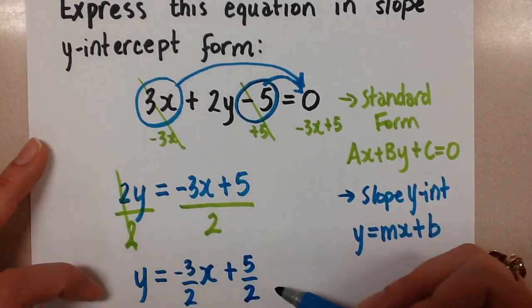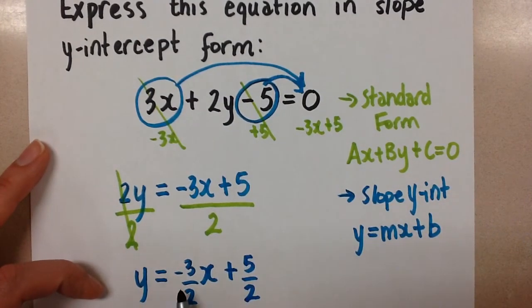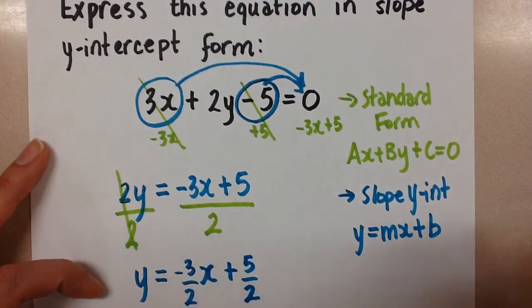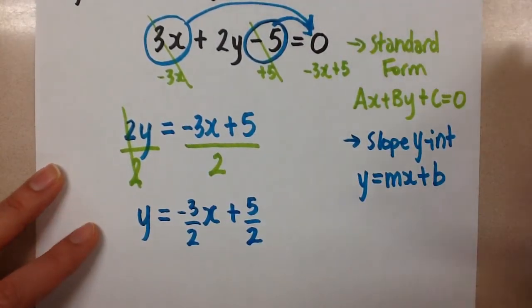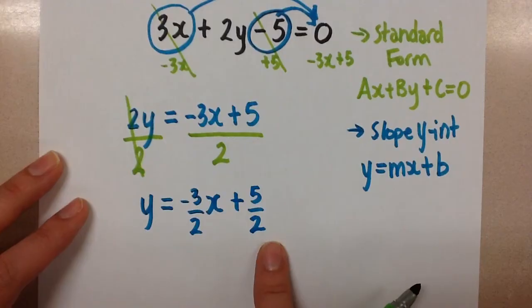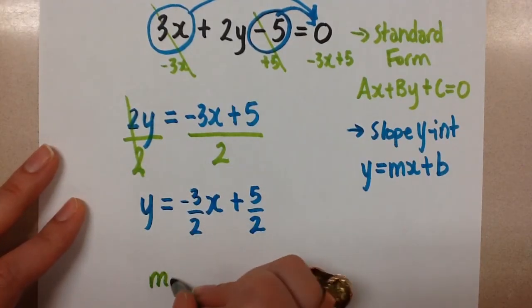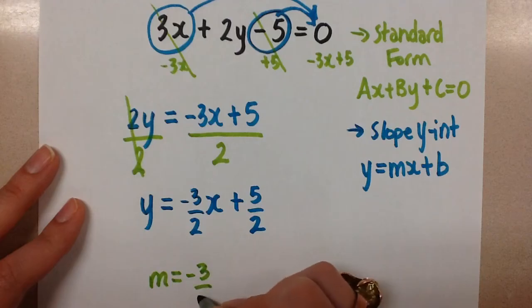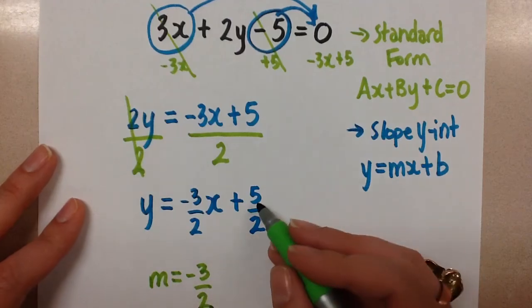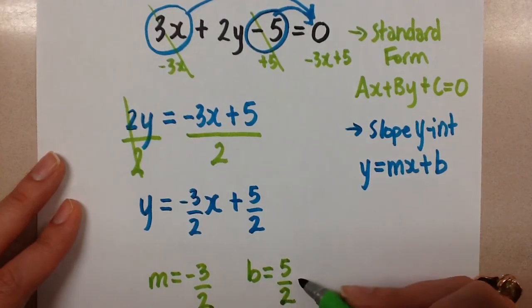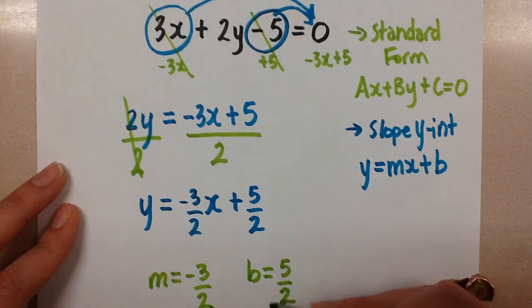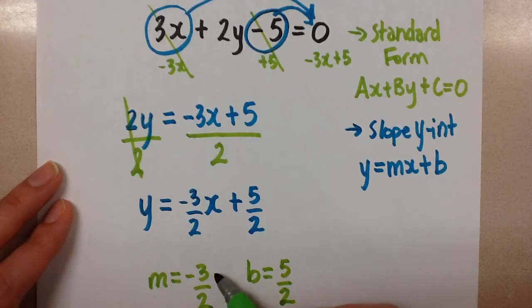So now take a look at our equation here. This is in y equals mx plus b form. So we've done what we set out to do. If we wanted to go a step further, we can pick out the slope and the y-intercept from this form. That's why it's useful. So here our slope is the negative 3 over 2. And our y-intercept is the positive 5 over 2. You can change that to a decimal if you need to to help you graph it. And you can put that y-intercept on as 2.5 if that helps. The slope should be left as a fraction because that helps you to see the rise and the run easily.